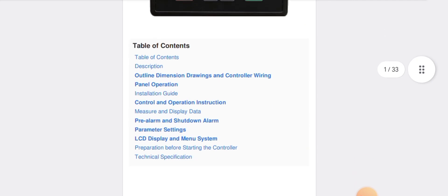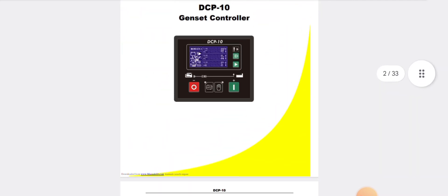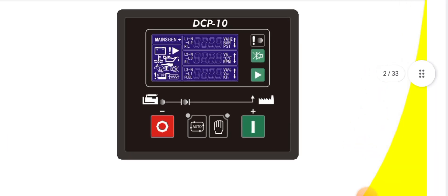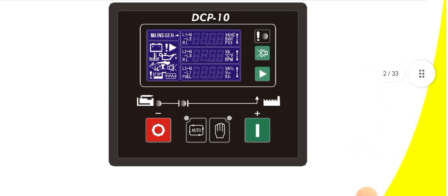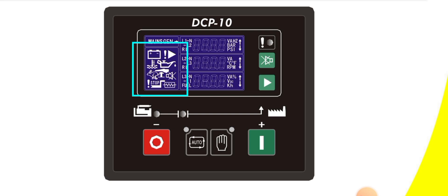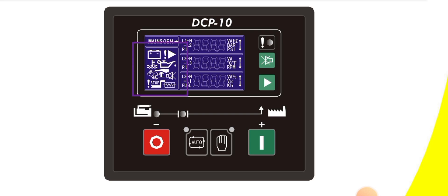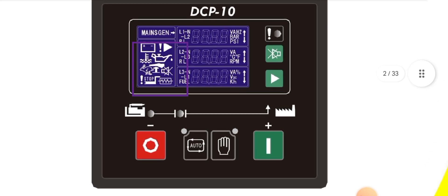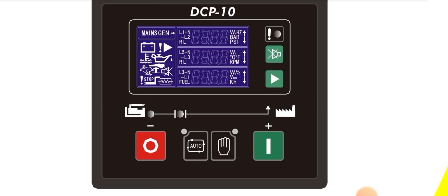Let's move to explain the main wiring. As you can see, the display looks like this. All the warning battery indications, alarm mute, emergency stop, over frequency, under frequency — all will be shown here on the left side display portion.